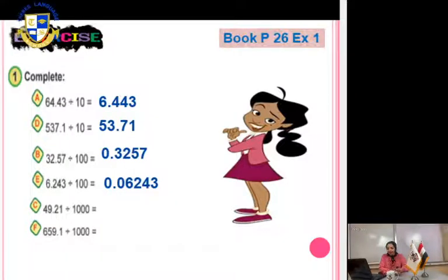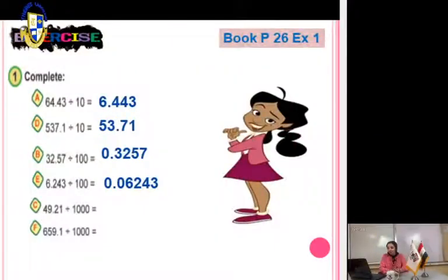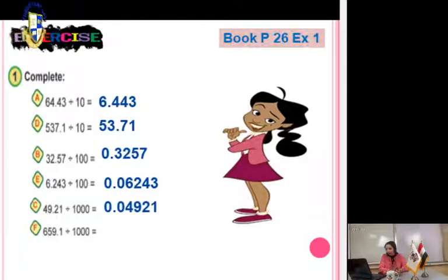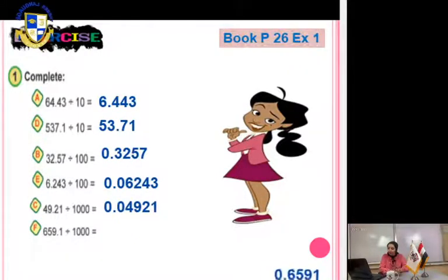49.21 divided by 1000: three zeros, so move the decimal point 3 places to the left. The answer is 0.04921. Another: 659.1 divided by 1000 — move the decimal point 3 digits to the left. The answer is 0.6591.